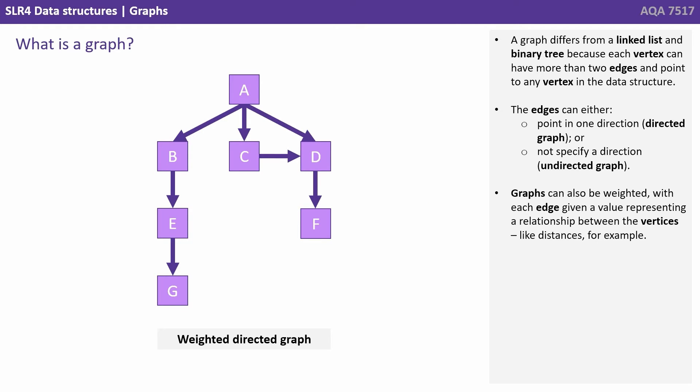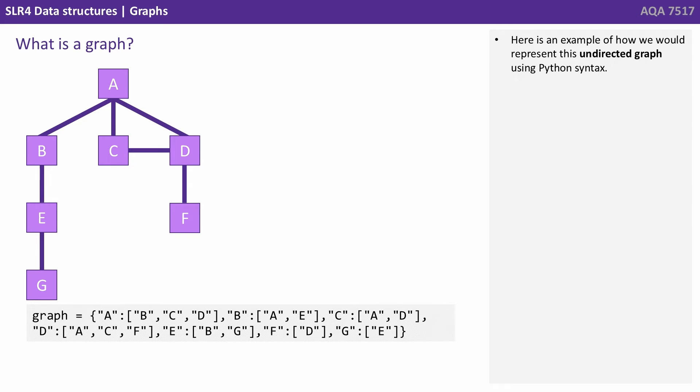Graphs can also be weighted with each edge given a value representing a relationship between the vertices, for example like distances. Here's an example of how we would represent this undirected graph using Python syntax.